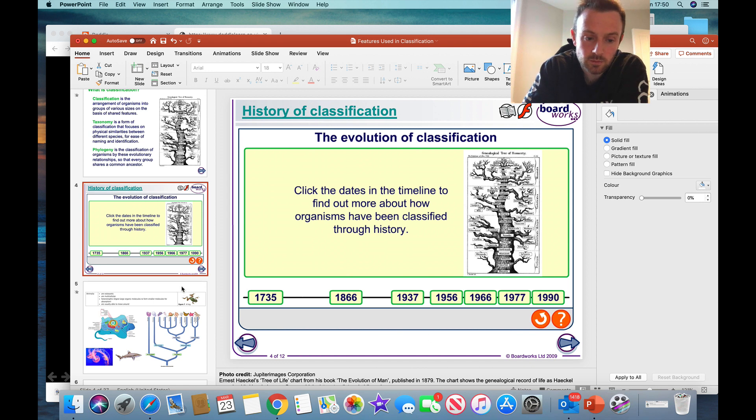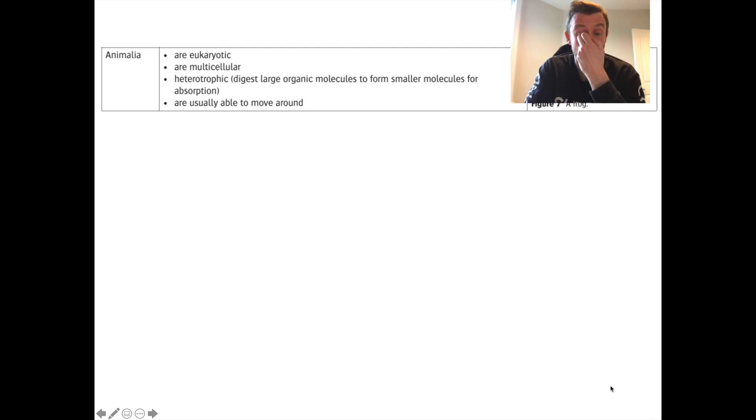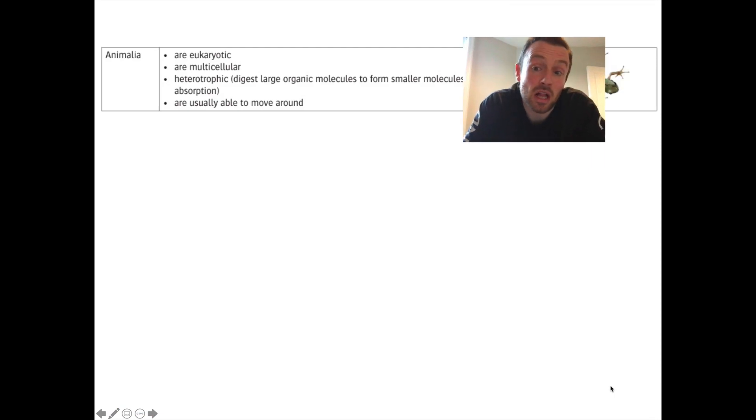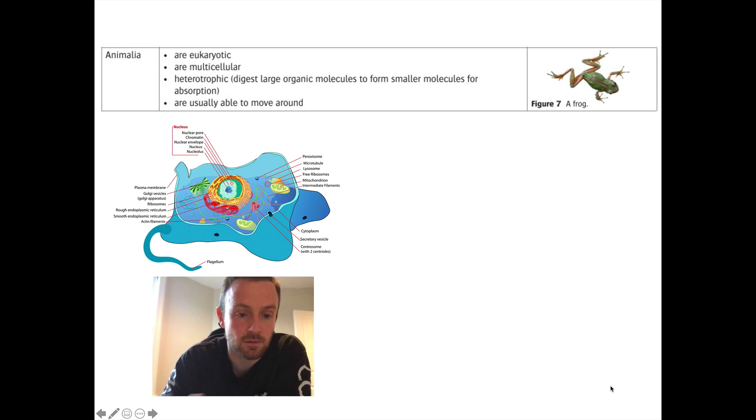So what we're going to do now is we're going to look at the main features of all the five different groups and we're going to start actually with the animals, the animalia. So the animals, and this is a good time to be making notes, you should definitely make note of these bullet points here which are taken from your textbook. So the animals, well first of all they're eukaryotic, so their cells look like this, this is a eukaryotic cell and it has lots of membrane bound organelles within it, and it also has a true nucleus which is the test of whether it's a eukaryotic cell.